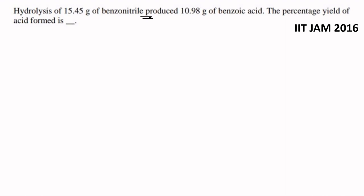So jo benzonitrile hai, uska formula kya hota hai — this is benzonitrile. Benzene ke upar CN group hota hai, this is benzonitrile.